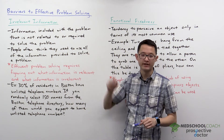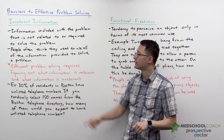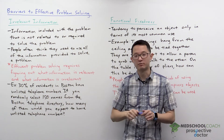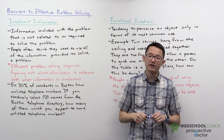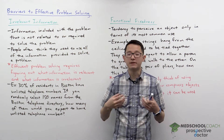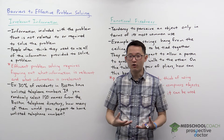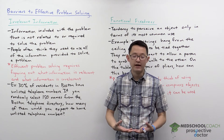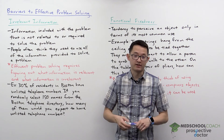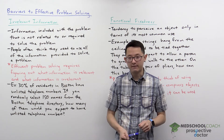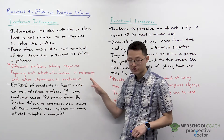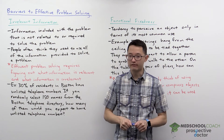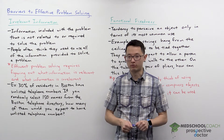Irrelevant information is information that is included with the problem that is not related to or required to solve the problem. The reason why irrelevant information is an issue is because people generally believe that they need to use all the information they're provided with to solve a problem. However, that's often not the case. So what that means is if people want to solve problems efficiently, they need to be able to figure out what information is relevant and what information is irrelevant.